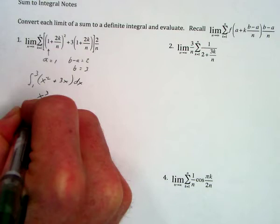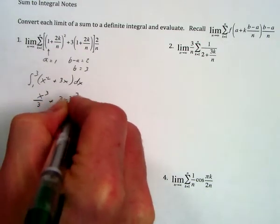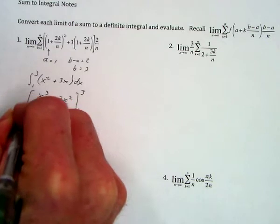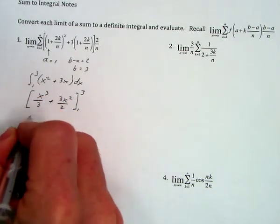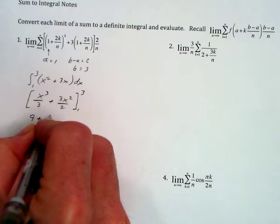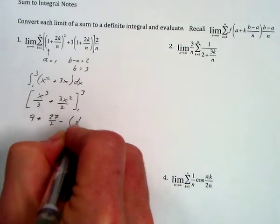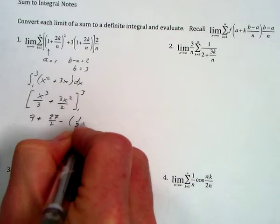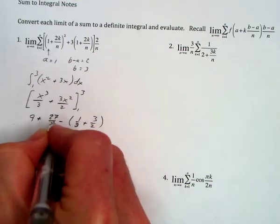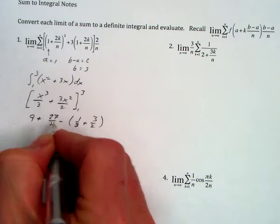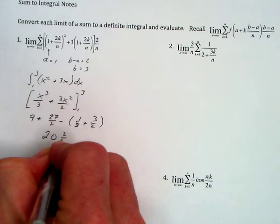Now we have a straightforward integral that we can evaluate: x cubed over 3 plus 3x squared over 2 evaluated from 1 to 3. Plugging those in, we'll have 9 plus 27 over 2 minus the quantity 1 third plus 3 halves. Subtracting the 3 halves gives 24 over 2, which is 12. 12 plus 9 is 21 minus 1 third, so we get 20 and 2 thirds.